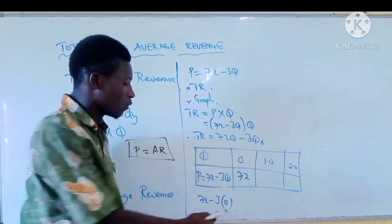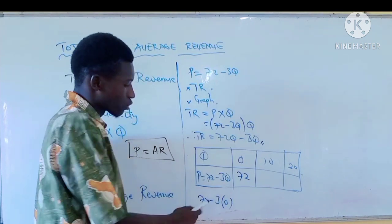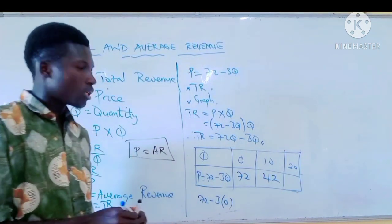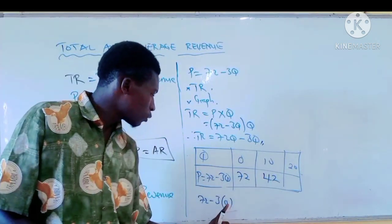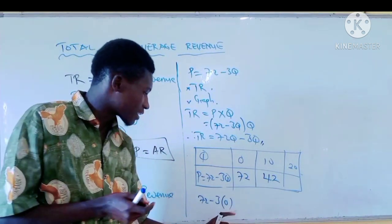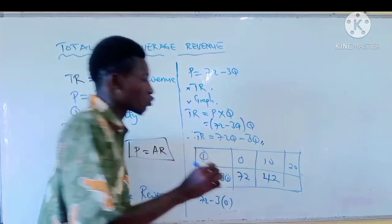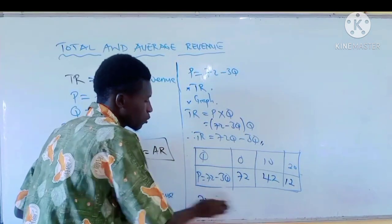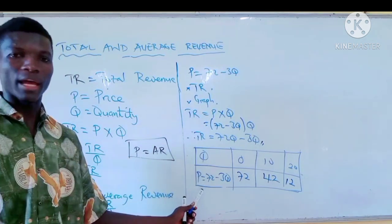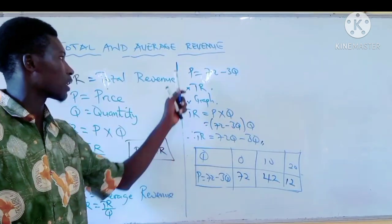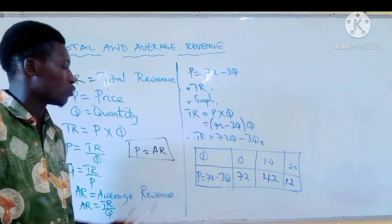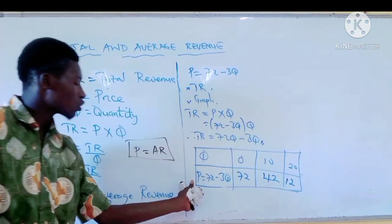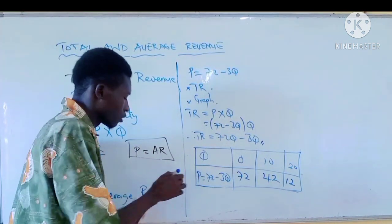When Q is 10, P is 42. From there, when Q is 20: 3 times 20 is 60, so 72 minus 60 gives P equals 12. Now you have the values for both the quantity and the price, which is also known as the average revenue line.